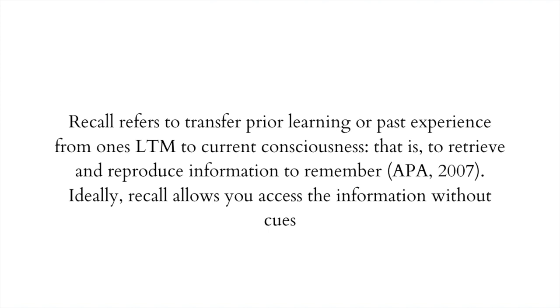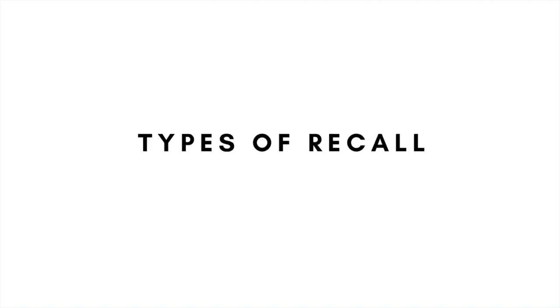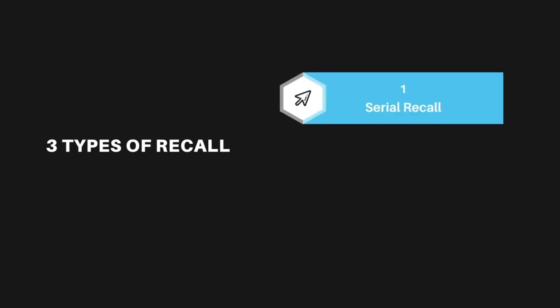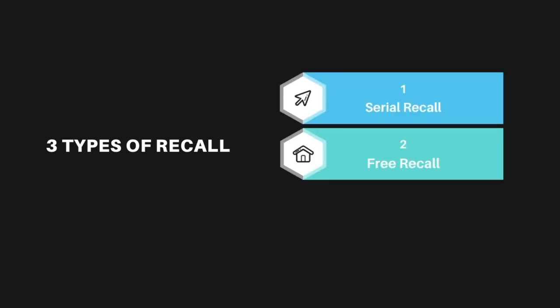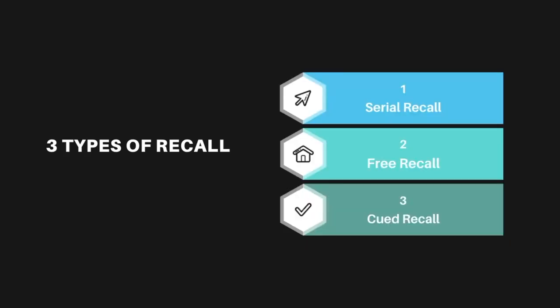Now that we know what recall is, let's look at the different types of recall. There are three key types of recall. The first one is serial recall, the second one is free recall, and the final one is cued recall. Let's look at each of these types in a little more detail.